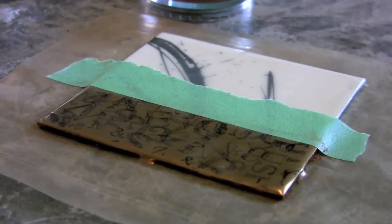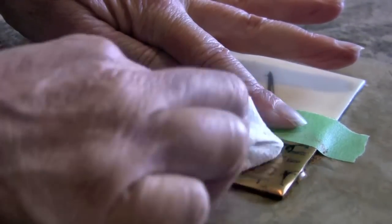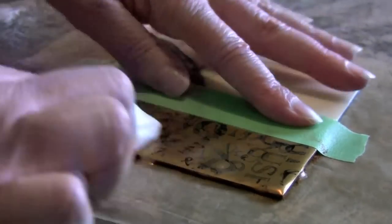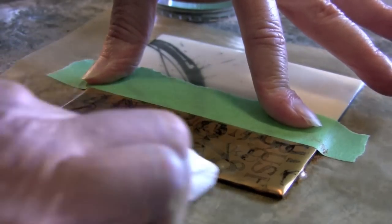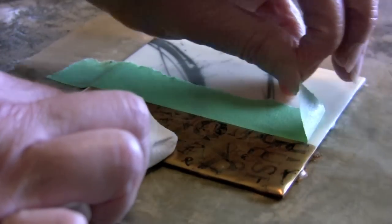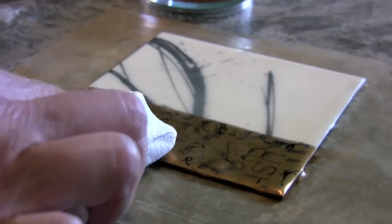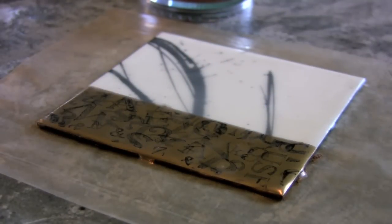You can do this on textured surfaces as well to create really interesting finishes and certainly on printed areas. So you can see in removing the tape you're able to get that nice clean crisp edge.